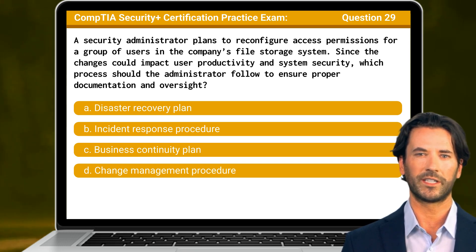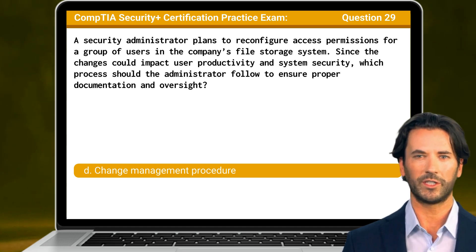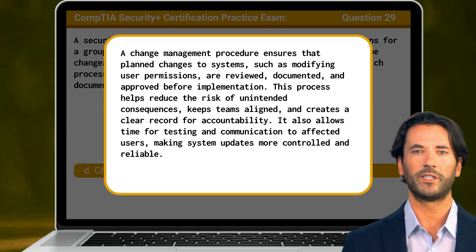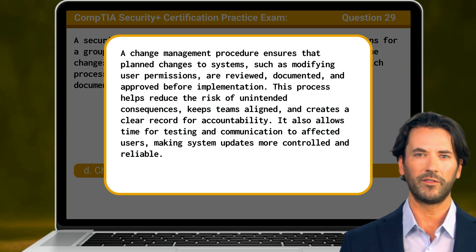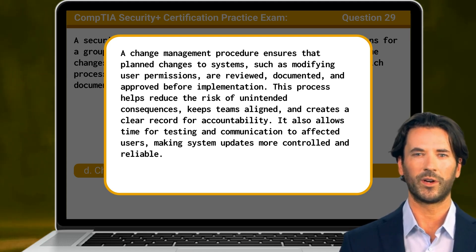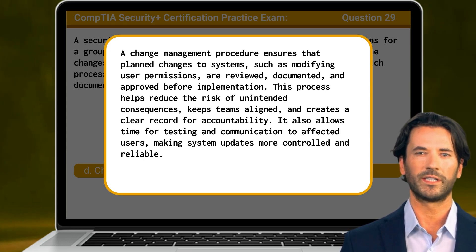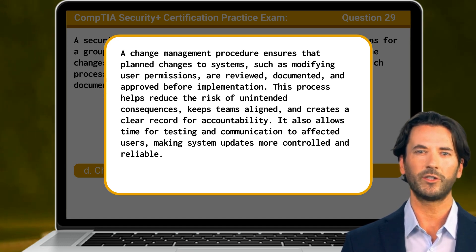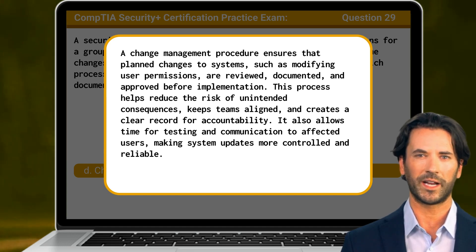The answer is D. Change Management Procedure. A change management procedure ensures that planned changes to systems, such as modifying user permissions, are reviewed, documented, and approved before implementation. This process helps reduce the risk of unintended consequences, keeps teams aligned, and creates a clear record for accountability. It also allows time for testing and communication to affected users, making system updates more controlled and reliable.